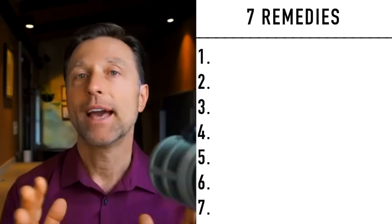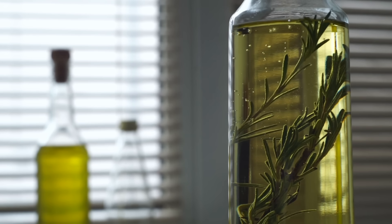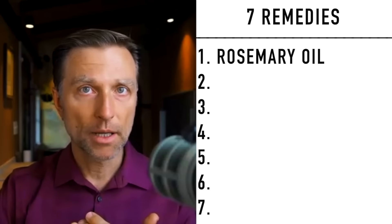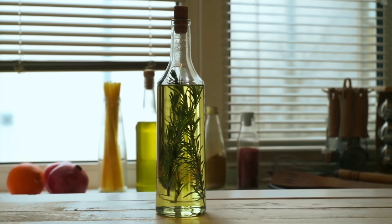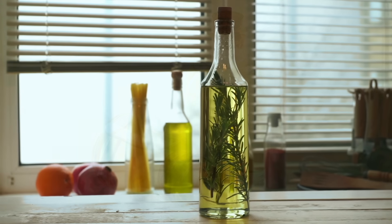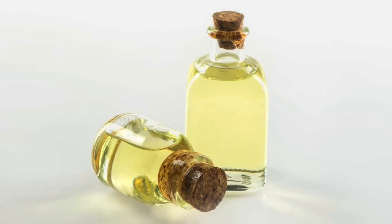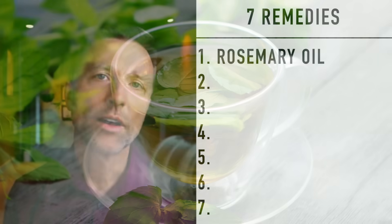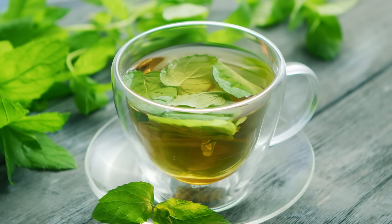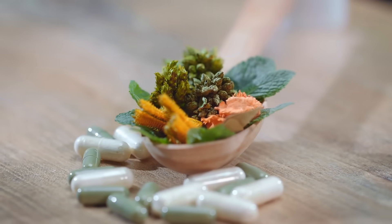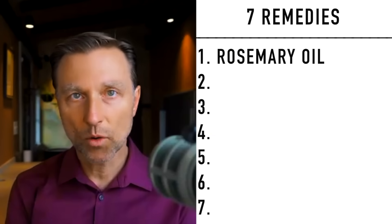Now let's talk about some remedies for these types of alopecia. Number one: rosemary oil is a really great natural oil to rub into your scalp each night before bed. There are certain properties in rosemary oil that are great for many different types of alopecia. As a side note, castor oil is good for loss of eyebrows. You can also use onion juice, garlic oil, and green tea — wait till it cools before rubbing it into your scalp. There are many herbal extracts that can help stimulate hair growth.